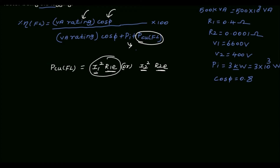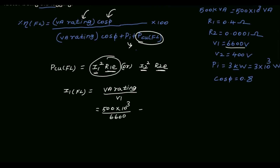The VA rating is the product of voltage and current, so we can find the primary full load current I1. The full load primary current I1 equals VA rating divided by V1, which is 500 × 10³ divided by 6600 volt. So I1 is 75.7575 amps.